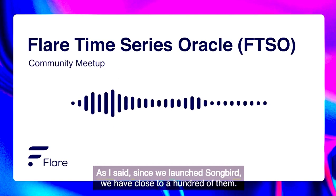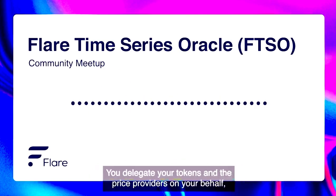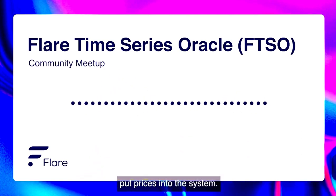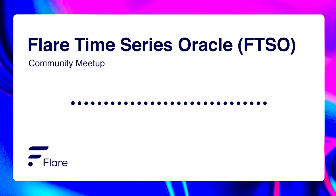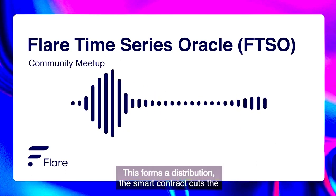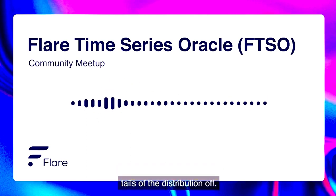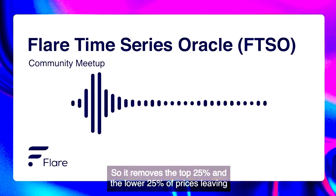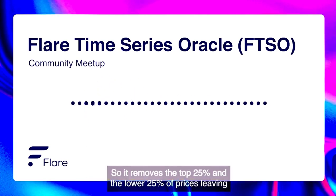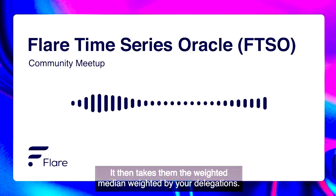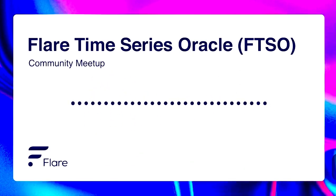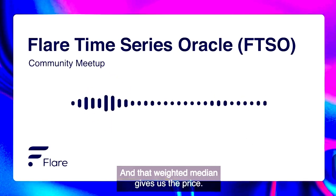Since we launched Songbird, we have close to 100 of them. You delegate your tokens, and the price providers on your behalf put prices into the system. Those prices are aggregated in the FTSO smart contract. This forms a distribution. The smart contract cuts the tails of the distribution off — it removes the top 25% and the lower 25% of prices, leaving it with the 50% in the middle. It then takes the weighted median, weighted by your delegation, and that weighted median gives us the price.